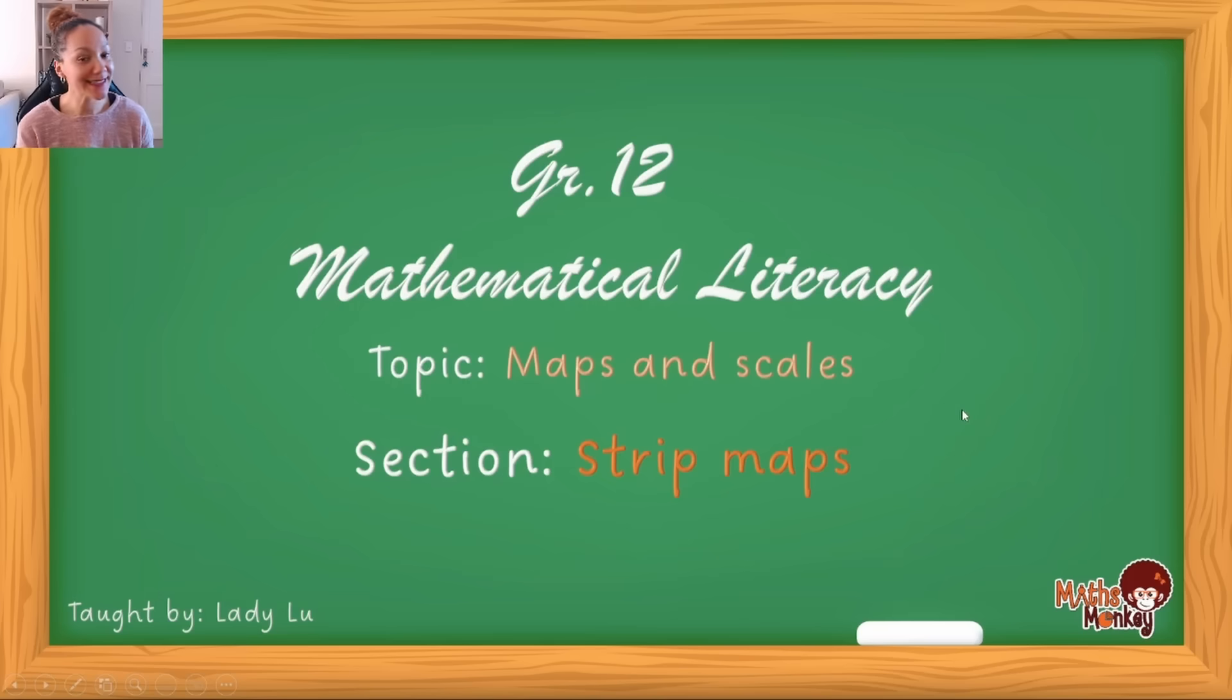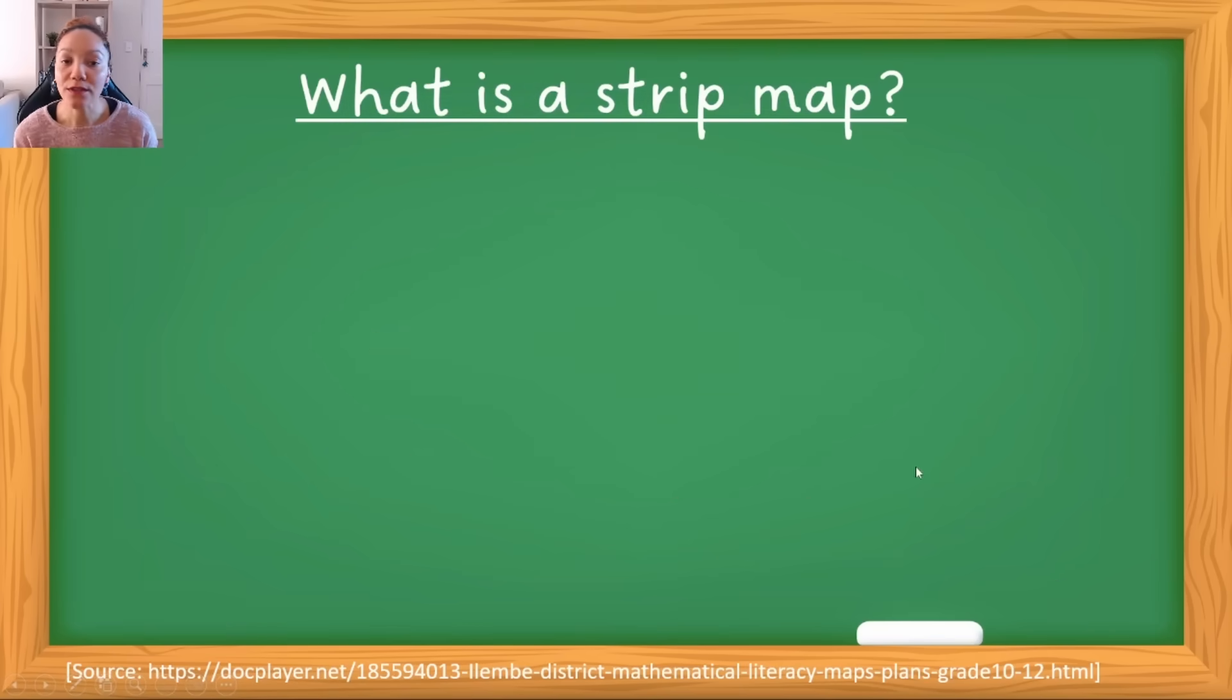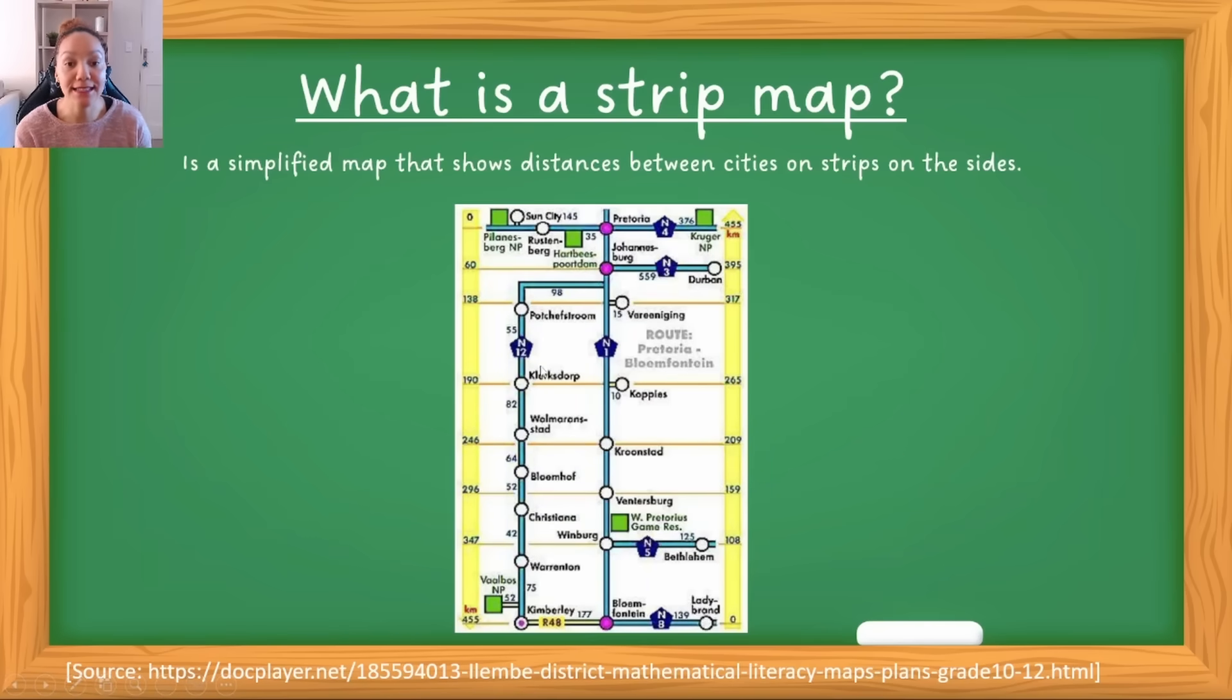Maps and scales: strip maps. Let's start by making sure we understand the concept. What is a strip map? A strip map is a simplified map that shows the distances between cities on strips on the sides. So if I have a look at this, this is a strip map.